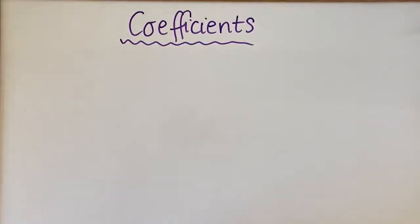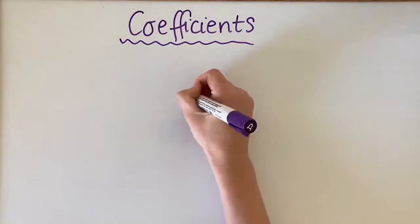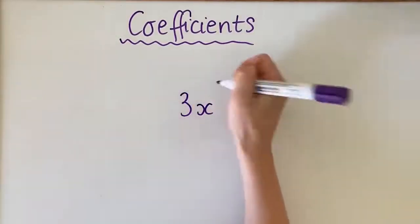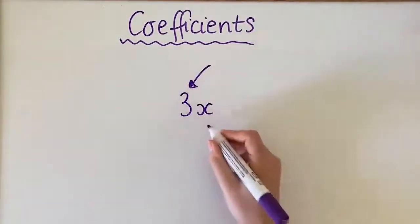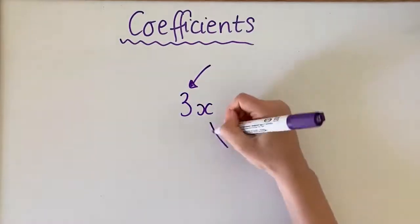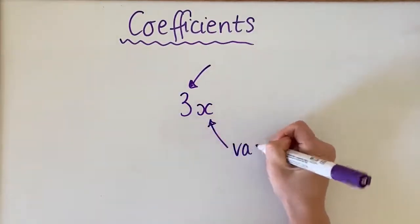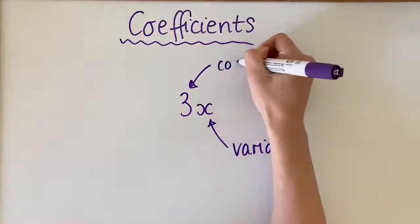Alright, so in algebra we use the terminology a coefficient. Now a coefficient is a number that sits in front of a variable. So this here is a variable and this here is a coefficient.